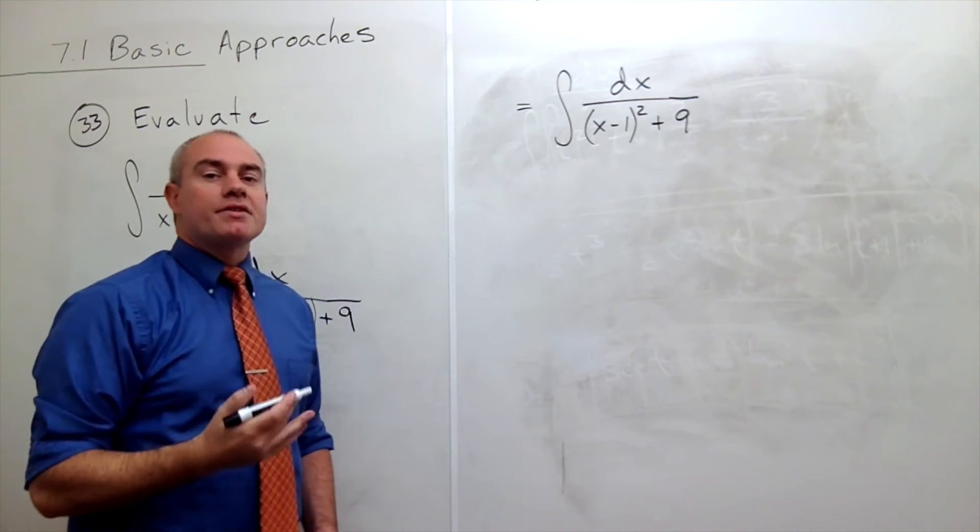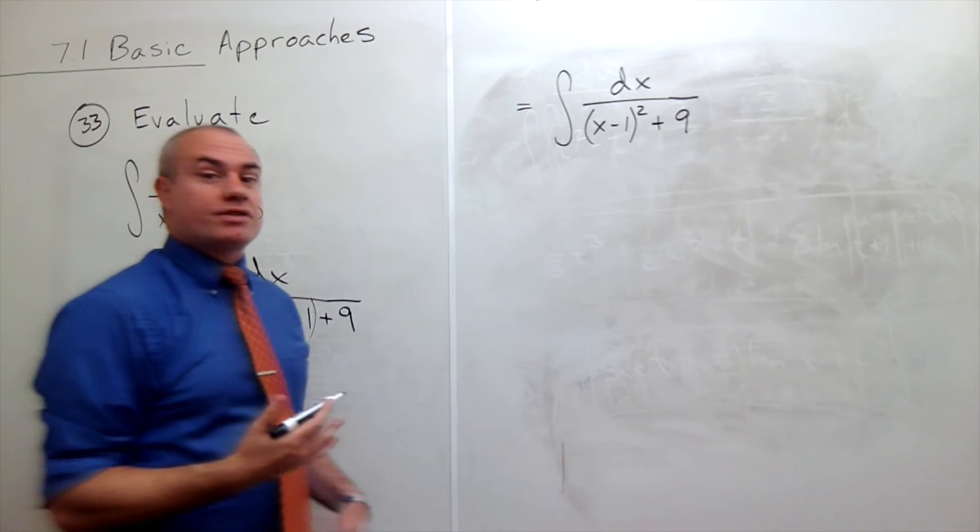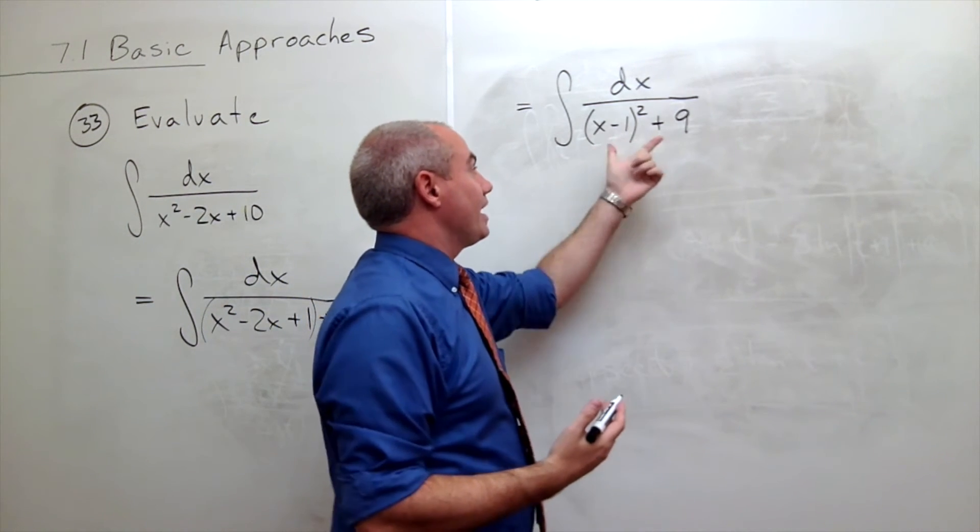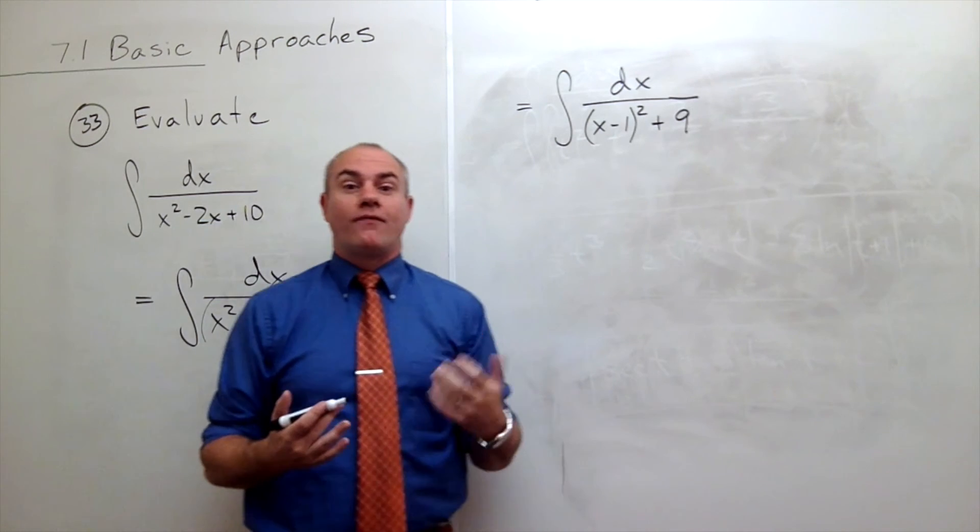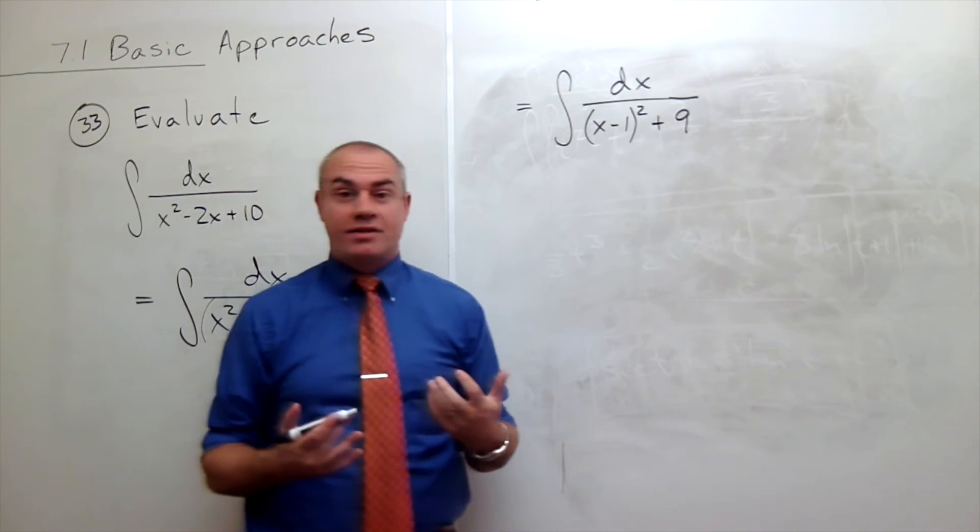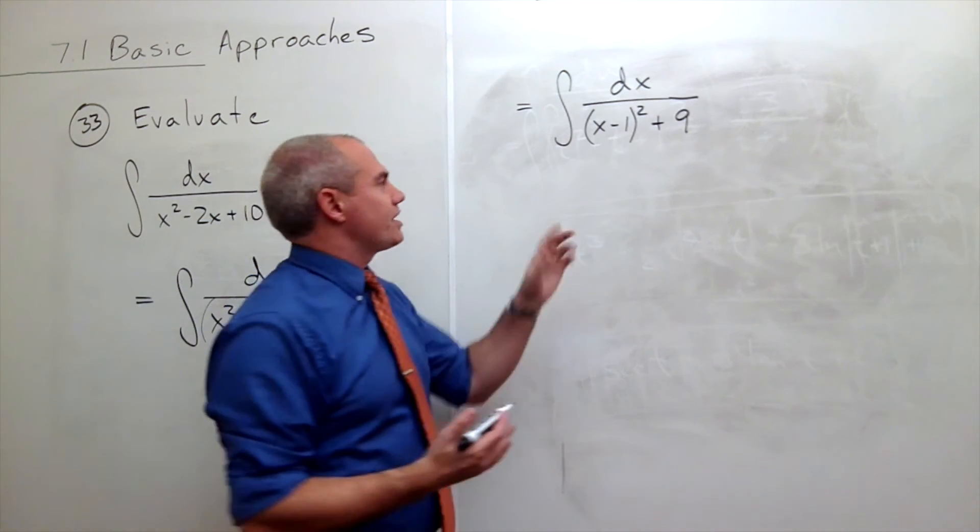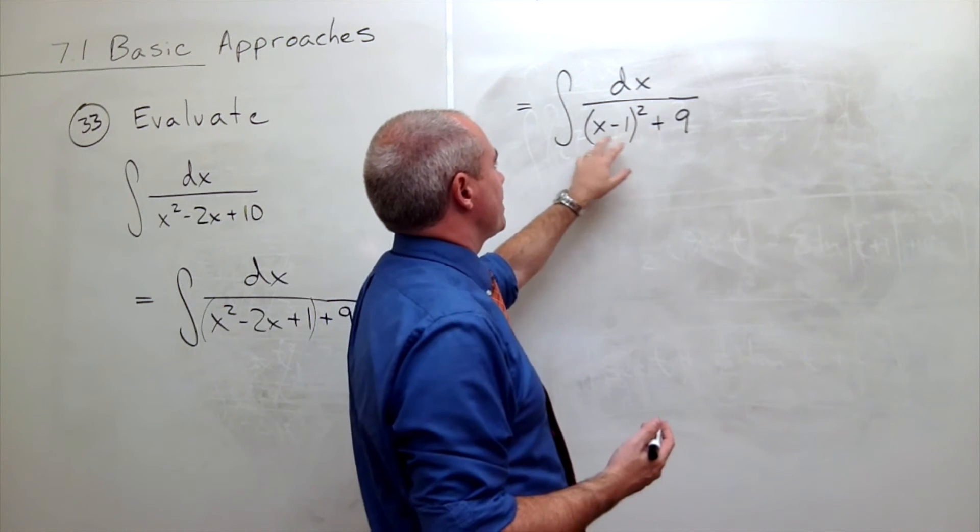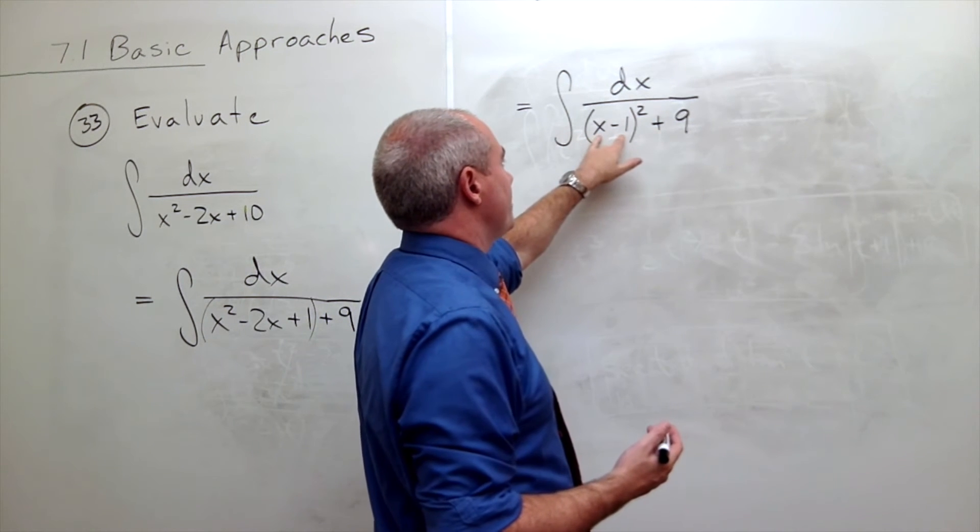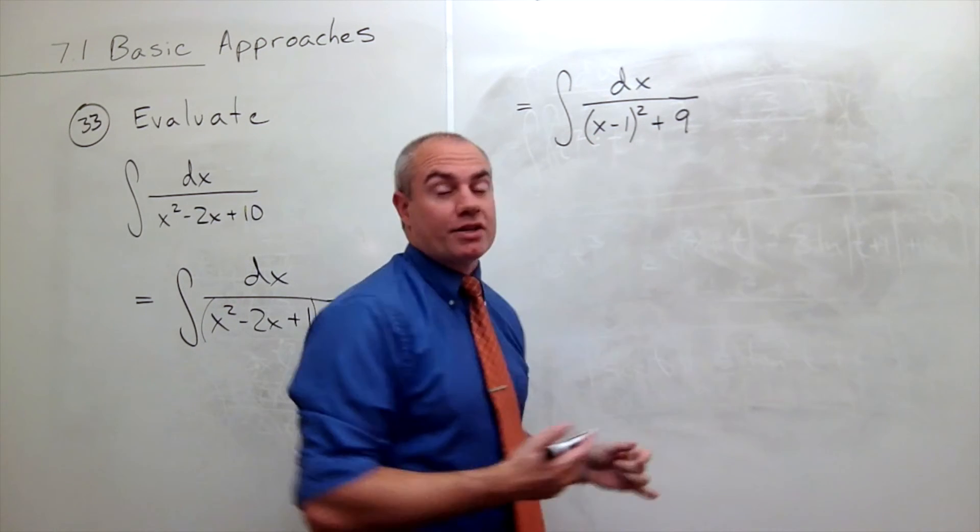At this point you might be able to just do this anti-derivative in your head, if you see that it has a form of a tan inverse. If not, and if you're saying, well I'm not exactly sure how to do this at this point, you can always make a u substitution for the x minus 1.